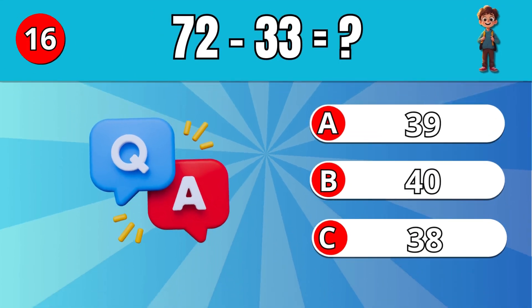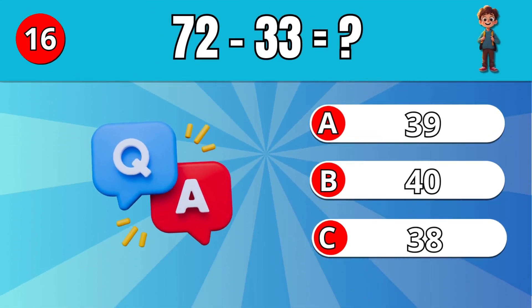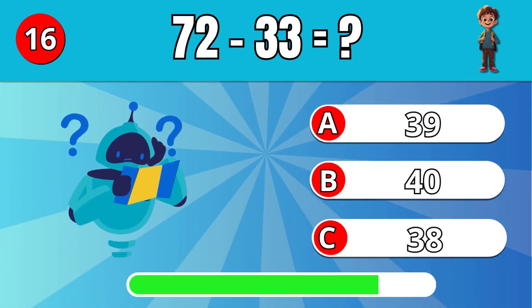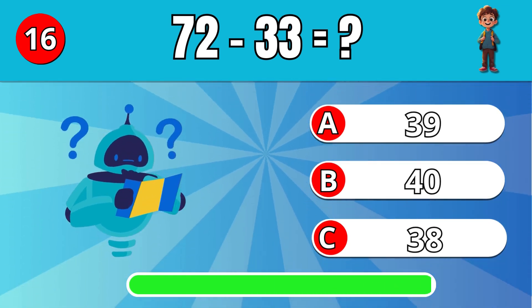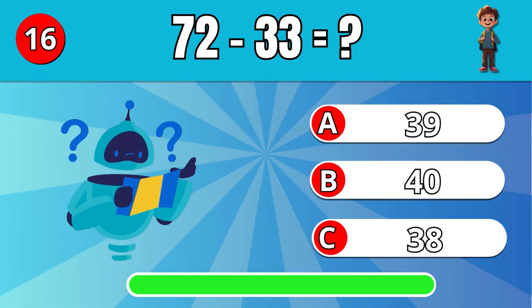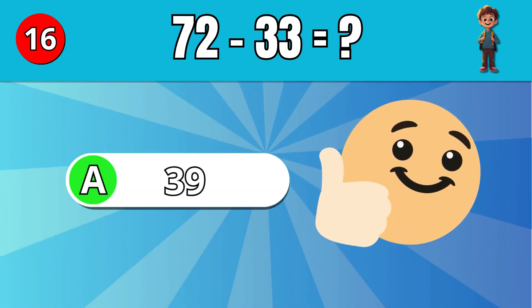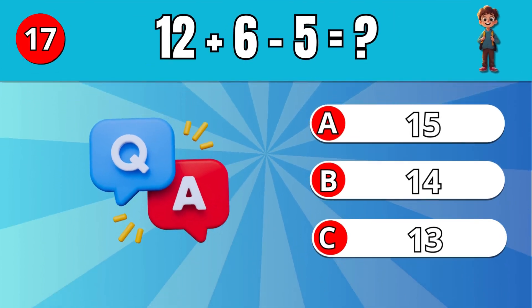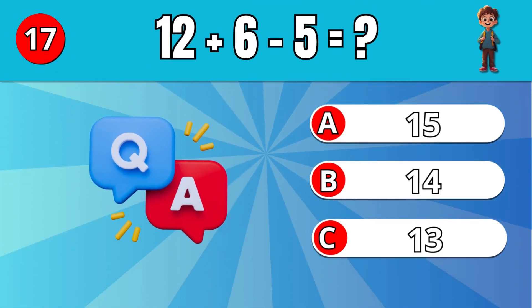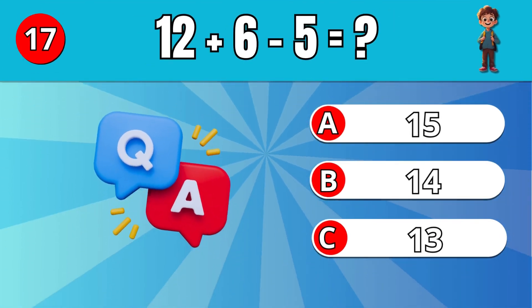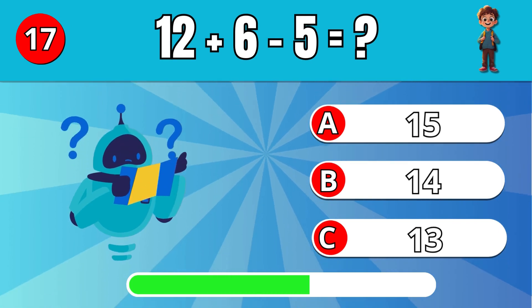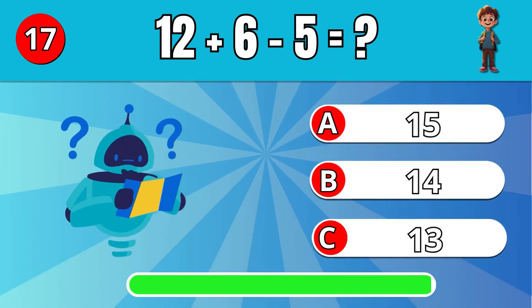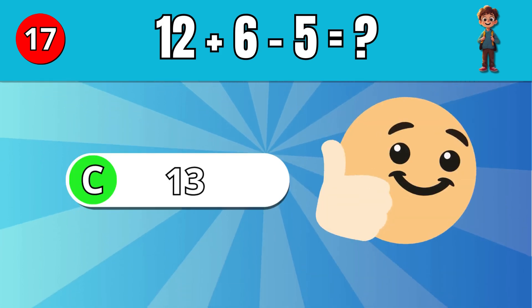What is 70 minus 33? A: 39. What is 12 plus 6 minus 5? C: 13.